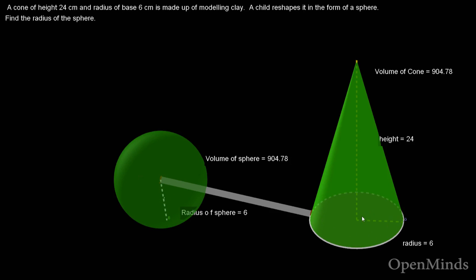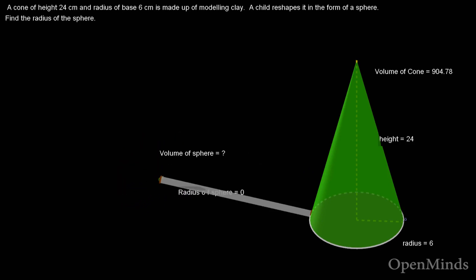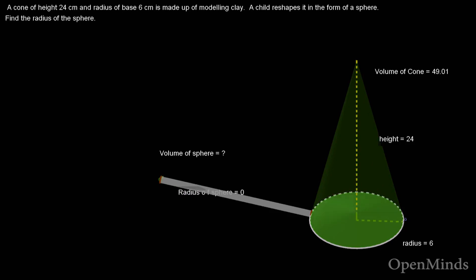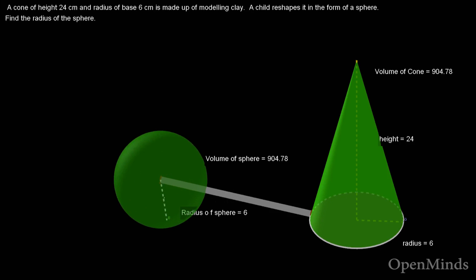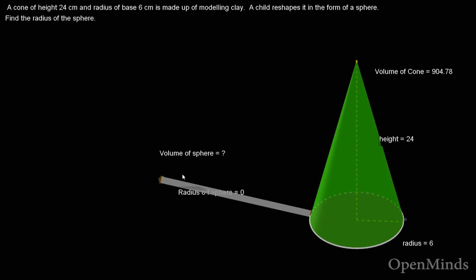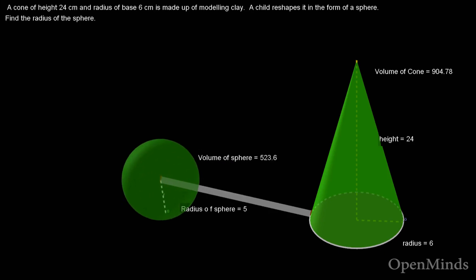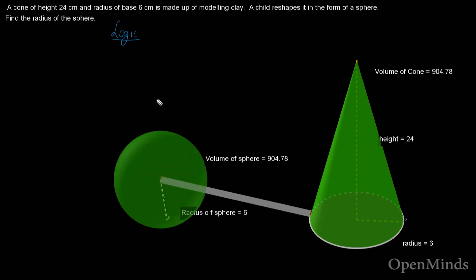The logic here is simple: that cone was made into a sphere. I can see that the amount of clay is being reshaped. The key principle is that the volume of the cone is 904.78, and the volume of the sphere should be the same — the amount of clay must be equal. So the volume of the cone should equal the volume of the sphere.